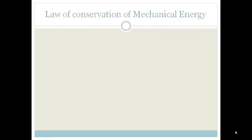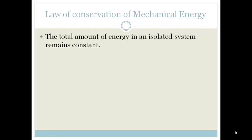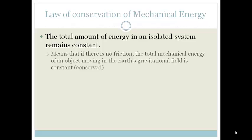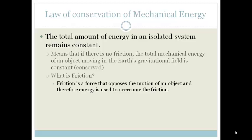Now, more specifically, we can talk about the law of conservation of mechanical energy. This states that the total amount of energy in an isolated system remains constant, which means if there's no friction, the total mechanical energy of an object moving in the Earth's gravitational field is constant or conserved. But what is friction? Friction is a force that opposes the motion of an object, and therefore we need energy to overcome the friction. So we're saying if there is no friction, mechanical energy is conserved.